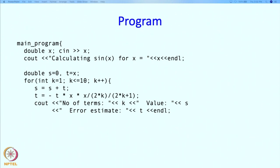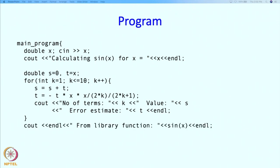When we run this program, we will see how our calculation of sin x is progressing and also get an error estimate — showing that the error in the current value is at most so much. At the end of the loop, we print out the value of sin x from the C++ library function sin(x), which serves as the gold standard correct value, so we can check whether our value matches.